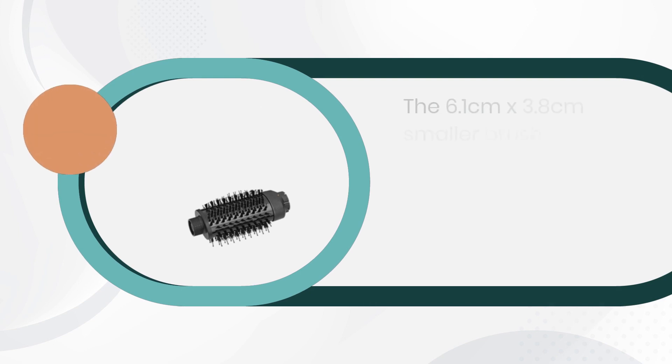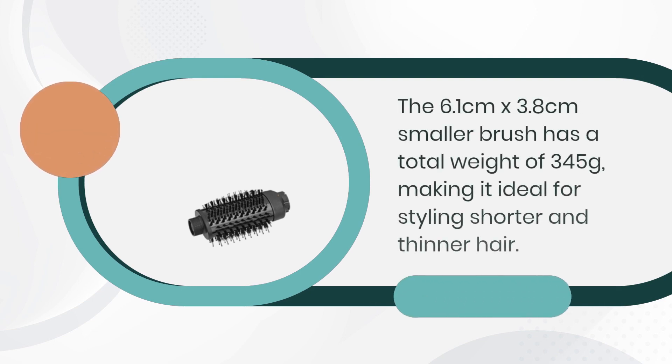The 6.1cm x 3.8cm smaller brush has a total weight of 345g, making it ideal for styling shorter and thinner hair.